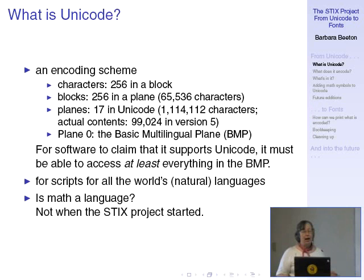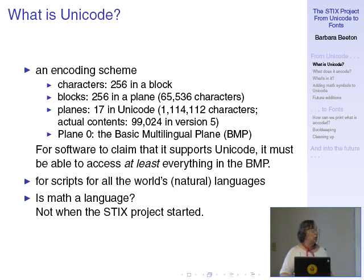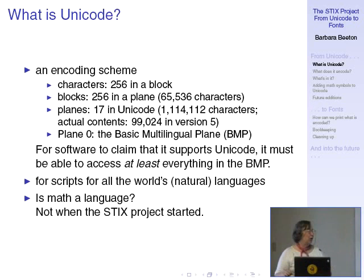The basic multilingual plane is where, up to now, almost everything has happened. For software to claim that it supports Unicode, it has to be able to access at least everything in the basic multilingual plane, which is plane zero. Unicode started out as a mechanism to allow all the world's natural languages to be communicated in a natural form, as opposed to having to transliterate or use other artificial schemes.